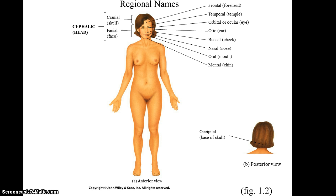On closer look, you can see that each of these regions has many small sub-regions. For the cephalic region, you have the cranial region and the facial region. The cranial region also includes the occipital region, which is the base of the skull on the posterior side. The facial region includes the frontal region or forehead, temporal regions or the temples, the orbital or ocular regions or the eyes, the optic regions or the ears, the buccal regions or the cheeks, the nasal region, the oral region, and the mental region.